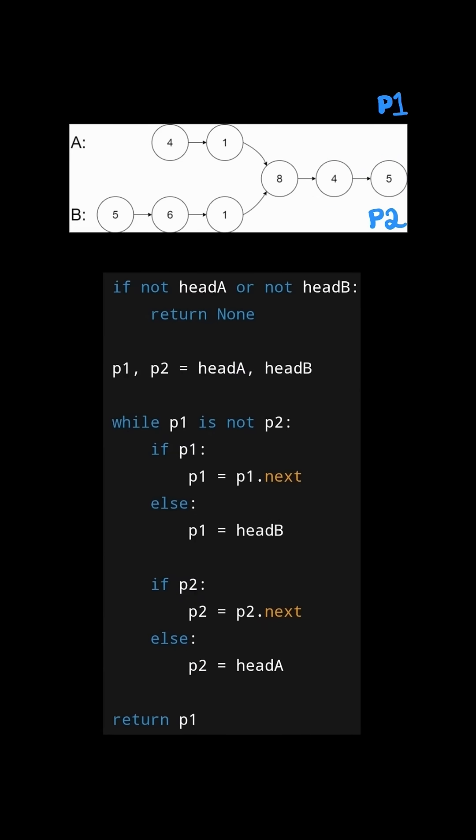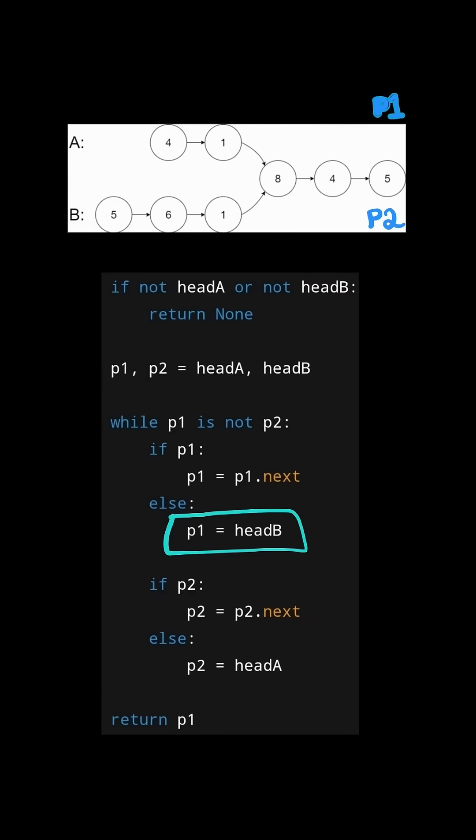Now notice P2 points to 5, but P1 is null. In this case, since they're not equal, we set P1 to the head of list B. And lastly, we advance P2.